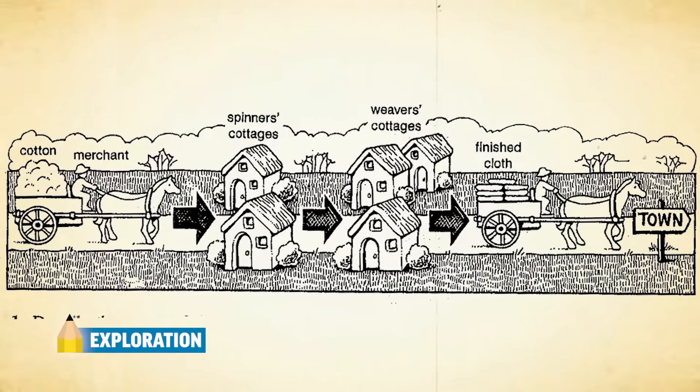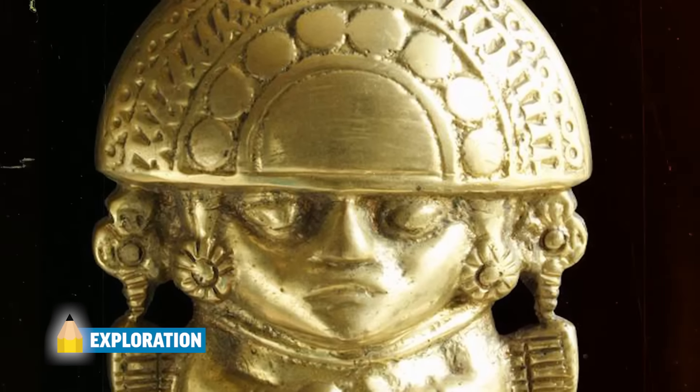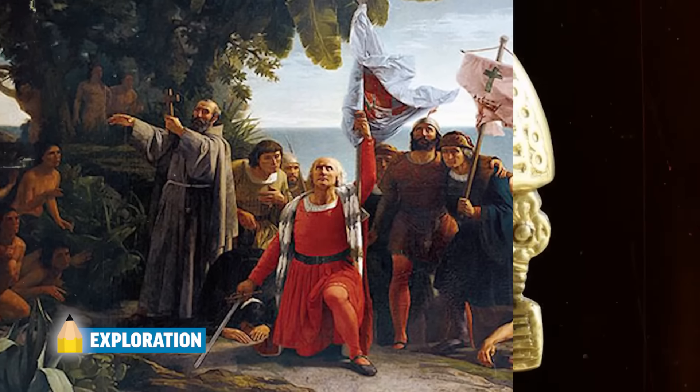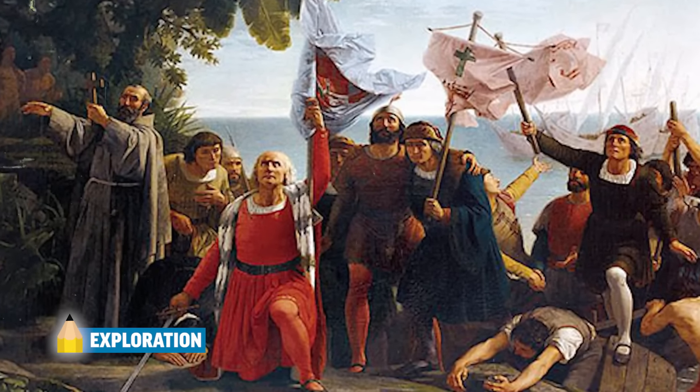This influx of raw goods from the Americas leads to the creation of the cottage industry, or the putting-out industry, in Europe — think of this as an old-school assembly line where people make different pieces of a finished product. Inspired by gold, glory, and God, European states sponsor expeditions to the New World and set up colonies. This scramble for land, money, and resources leads to conflict among European states.